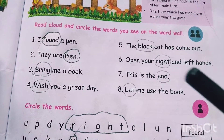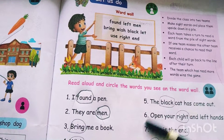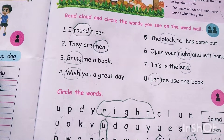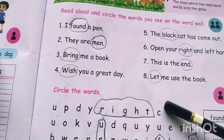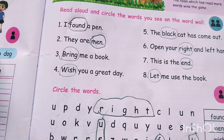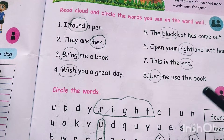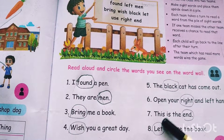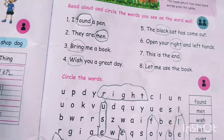'This is the end.' End is in the word wall, so we have to circle end. 'Let me use the book.' Let is in the word wall, so we have to circle let.